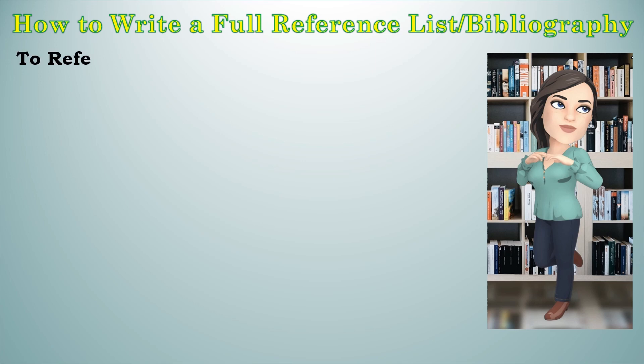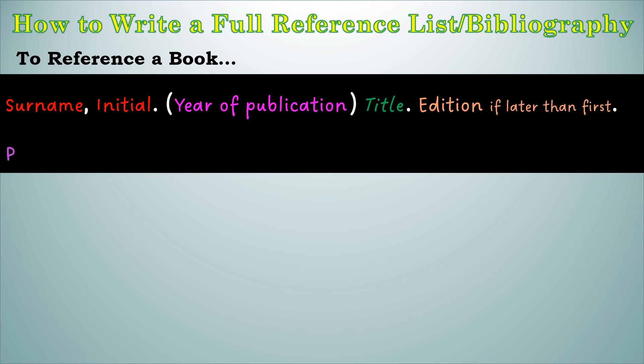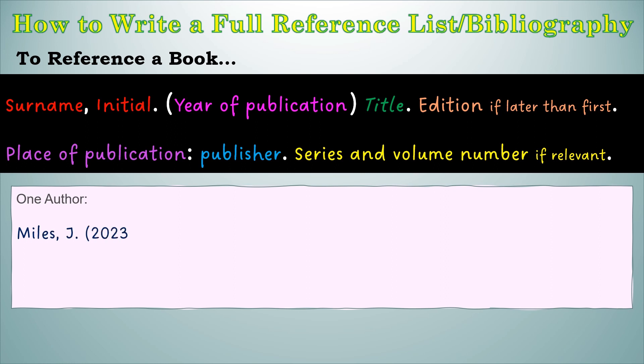To start with, I'm going to look at how to reference a book. You need the surname, comma, initial, full stop, then open brackets, year of publication, close brackets, then the title of the book in italics, full stop, the edition only if later than the first, full stop, the place of publication, colon, the publisher, full stop, and series and volume number if relevant, full stop. Make sure you get the punctuation marks correct as these are vital. The more practice you do, the easier it becomes. Let's look at an example for one author.